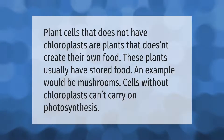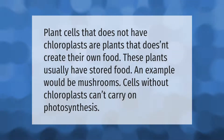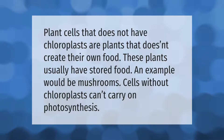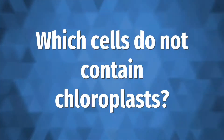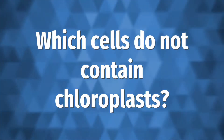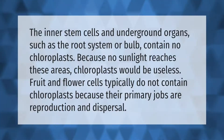Plant cells that do not have chloroplasts are plants that don't create their own food. These plants usually have stored food — an example would be mushrooms. Cells without chloroplasts can't carry on photosynthesis. The inner stem cells and underground organs such as the root system or bulb contain no chloroplasts because no sunlight reaches these areas.